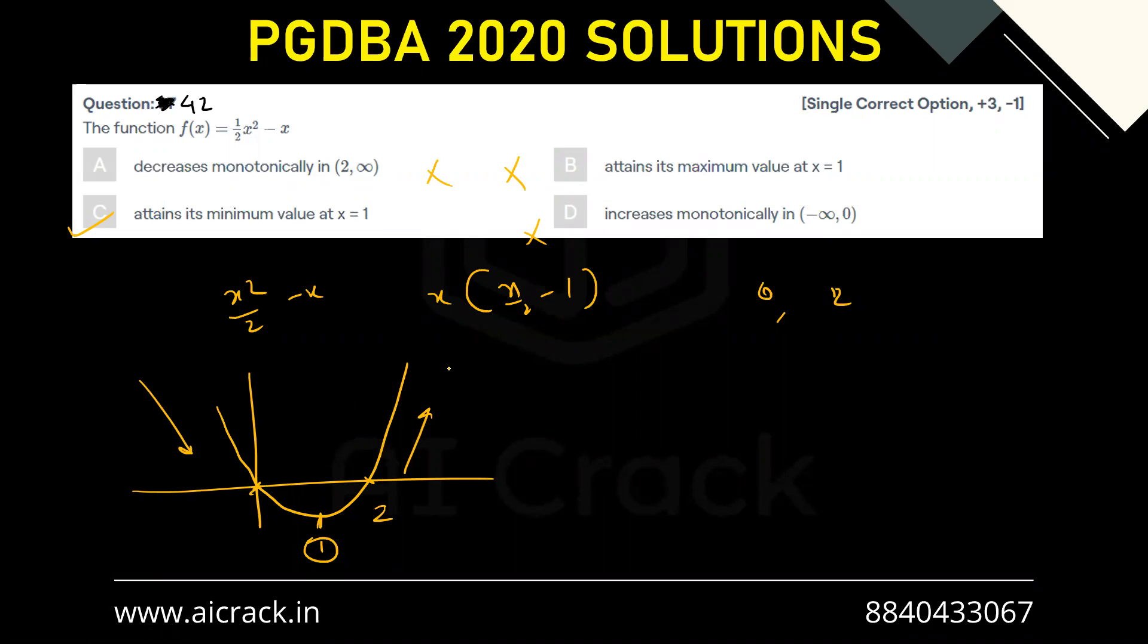That was our first method with the help of graph. Now the second method would be: let's say f(x) = x²/2 - x. We'll find f'(x), that would come out to be x - 1. So basically f'(x) is becoming 0 at x = 1, so it should be either minima or maxima.